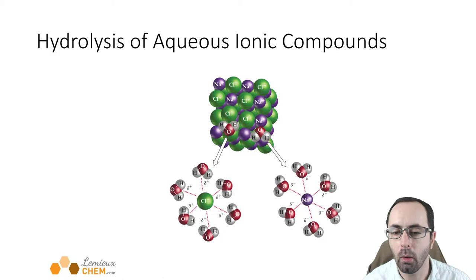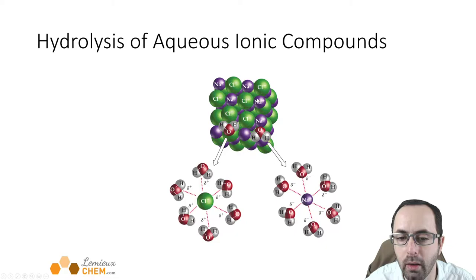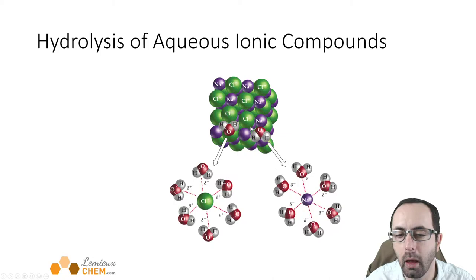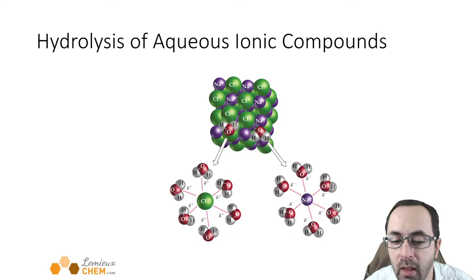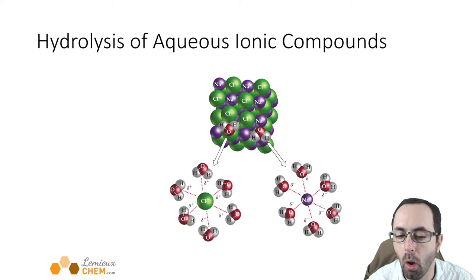Let's start by talking about ionic compounds and what happens when they dissolve in water. Ionic compounds are made of positive and negative ions. Here is an example — sodium chloride — it has positive sodium ions and negative chloride ions. Sodium chloride is table salt. When you put table salt in water, it dissolves very easily — you just stir it up and it dissolves.